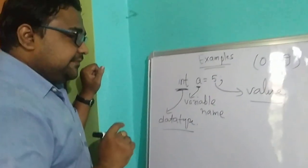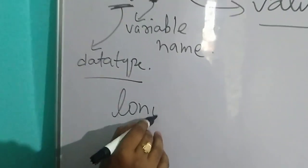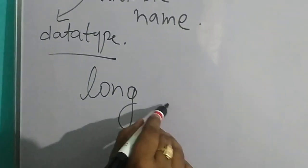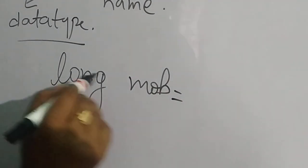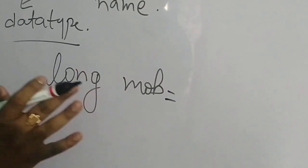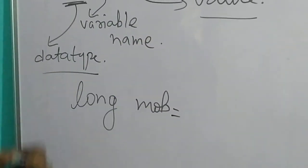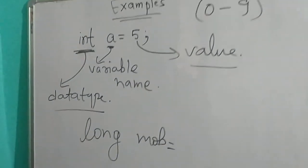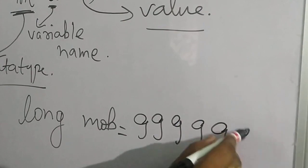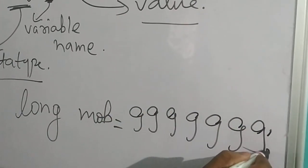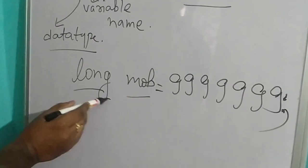The second example is long. If I write: long mob, the variable name is mob and the data type is long. Long is used to store very big integer values — for example, your mobile number or your UID number. The number is so big that it is not possible to store in integer, so we need to make it long.